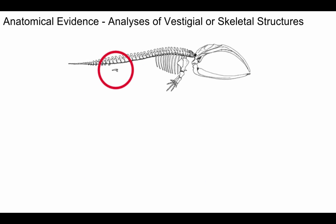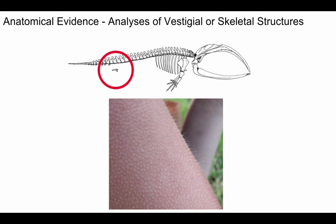We can also look at vestigial structures — vestiges of the past — which have no or significantly reduced function in modern organisms. One example is the vestigial hip bone and hind limbs found in whale skeletons, even though whales don't walk. In humans, goosebumps are vestigial: when we're cold or scared, our hair stands up. In a furry ancestor this would have provided warmth or intimidation, but it does very little for us now.